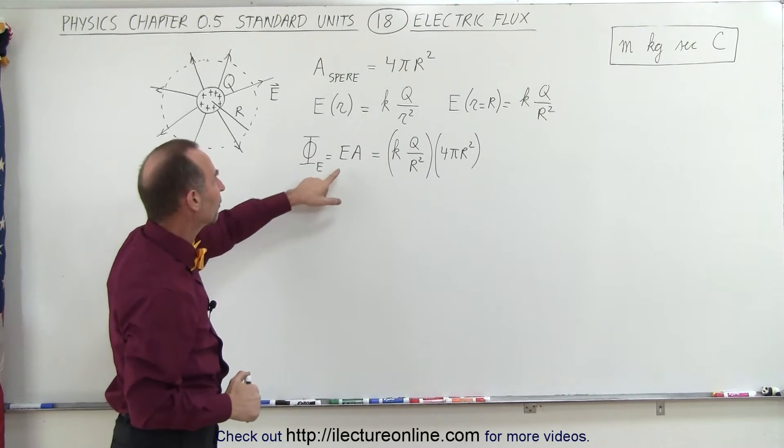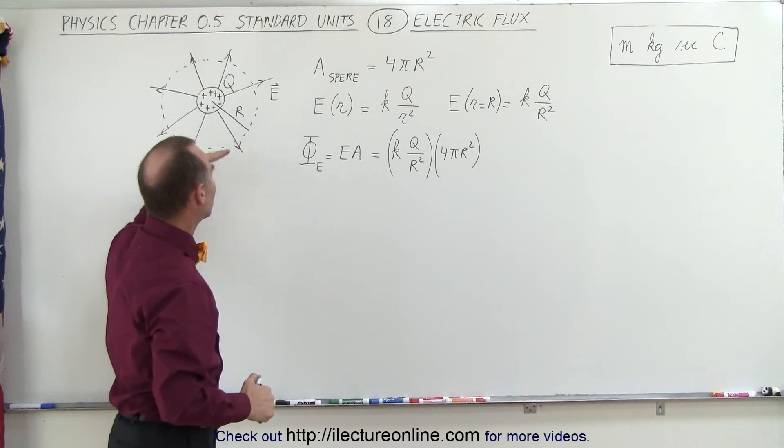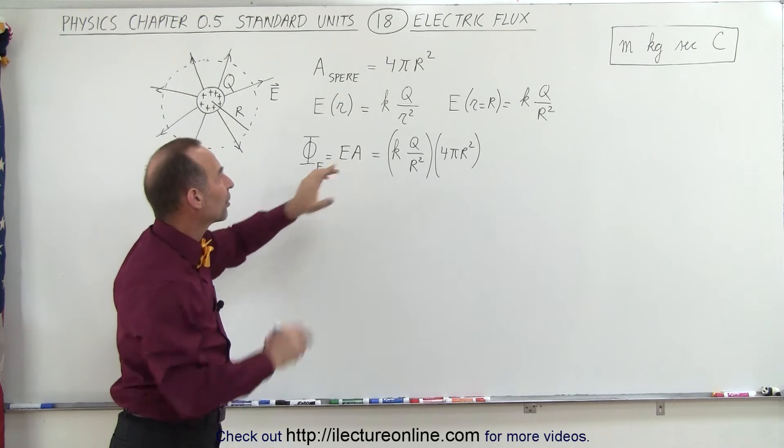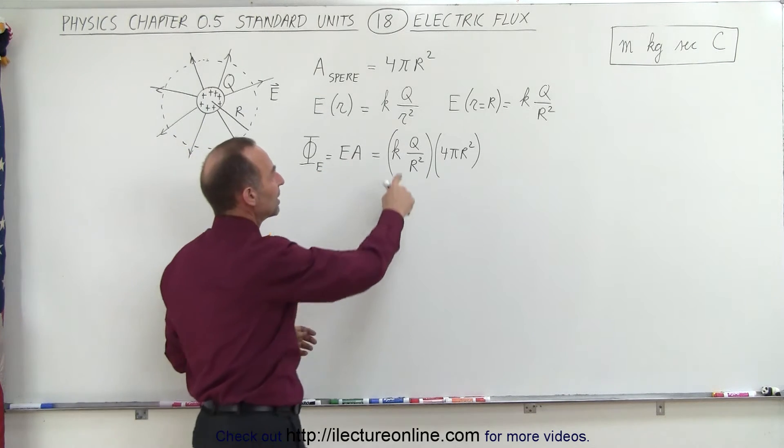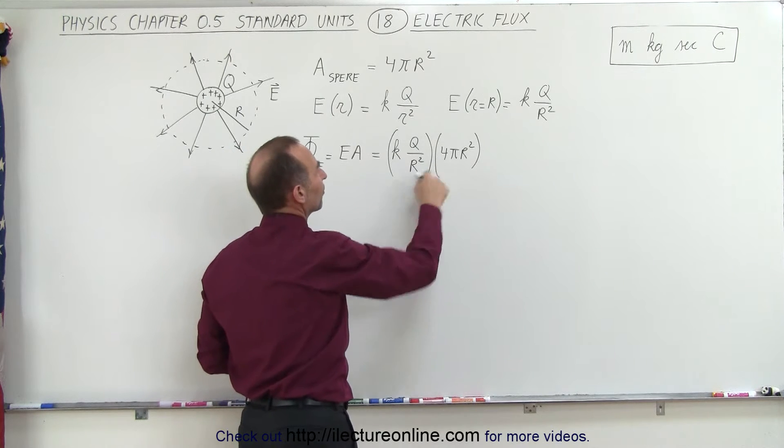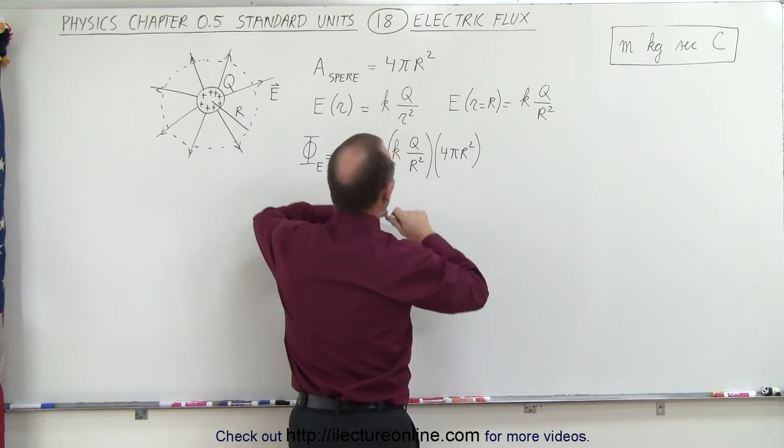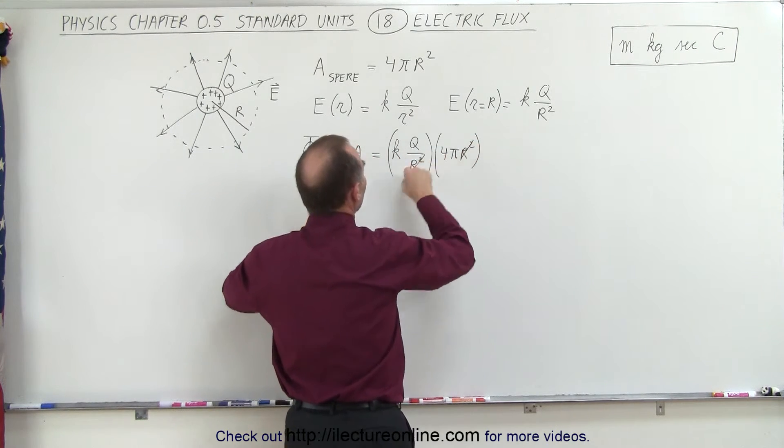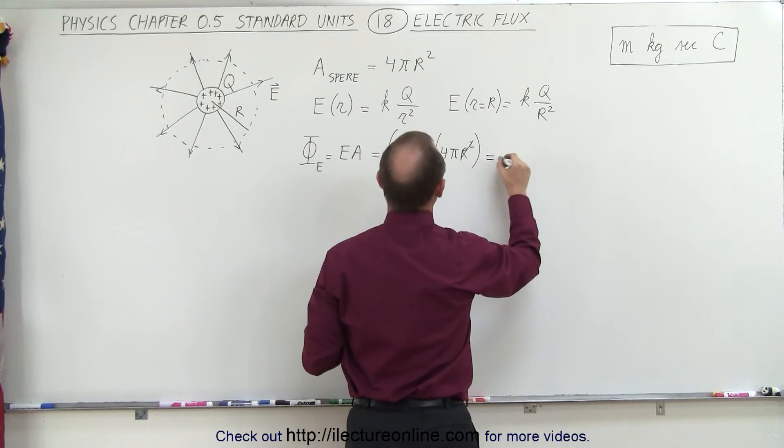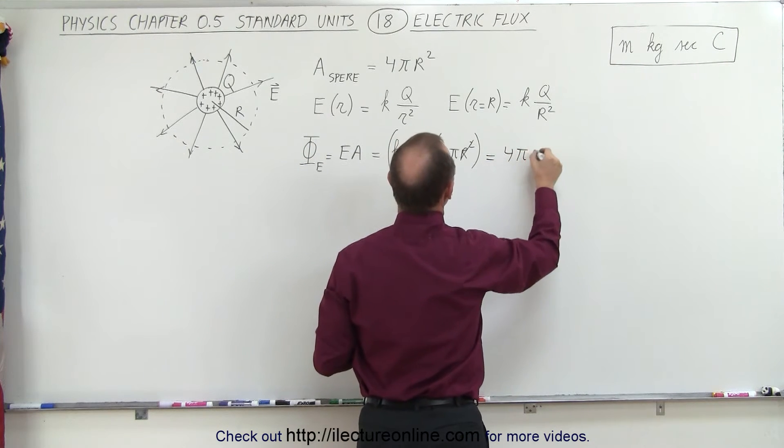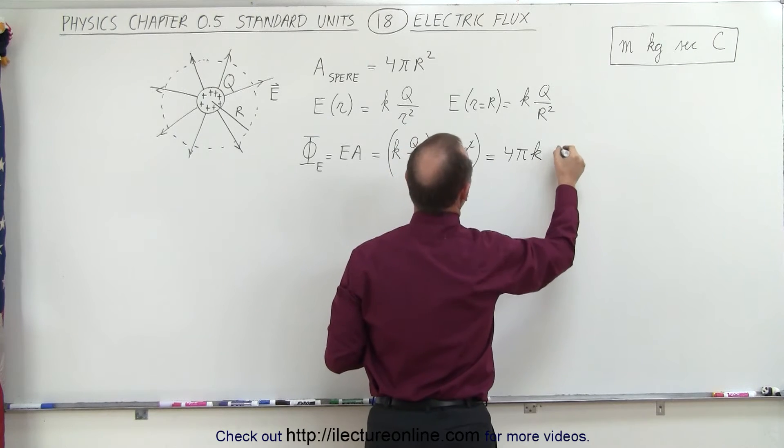So now here we have the product of the electric field at the surface times the area of the surface, so it's the kq over r² times 4πr². Notice that in this case the r² cancels out, and that leaves us with 4πk times q.